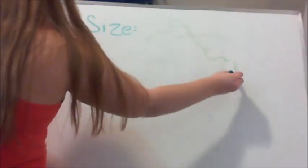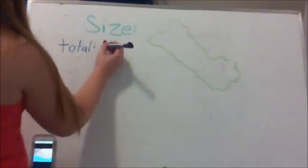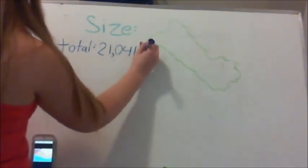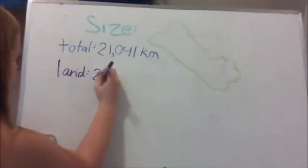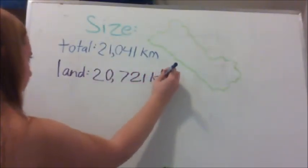Now we're going to talk about size. As far as total size, it is 21,041 square kilometers, and out of that, 20,721 is land, which leaves 320 square kilometers for water.